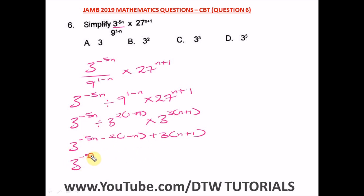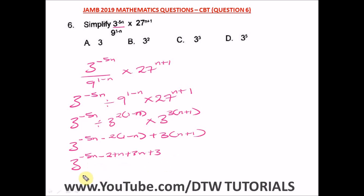Let's expand the brackets. We have four minus five n, then minus two times one gives minus two, and minus two times minus n gives plus two n. Then plus three times n gives three n, and plus three times one gives plus three.